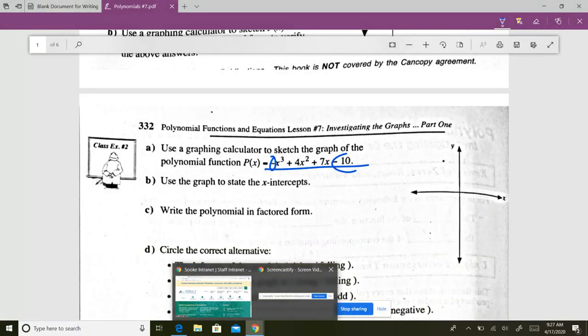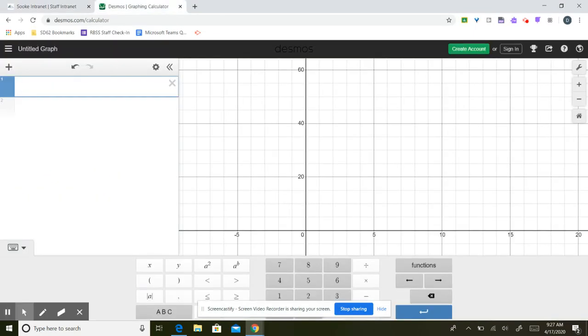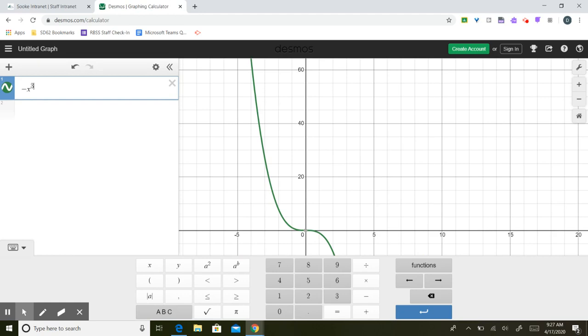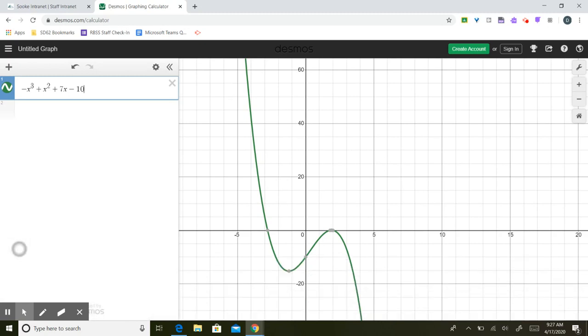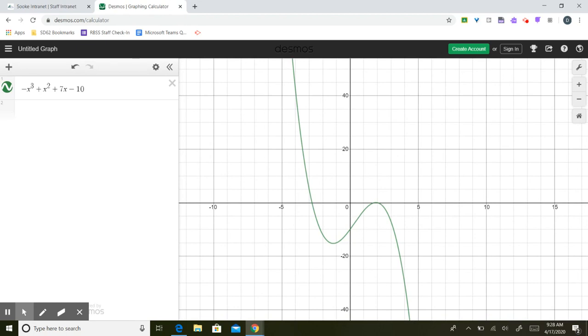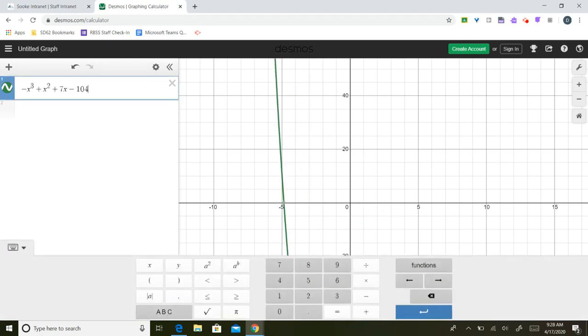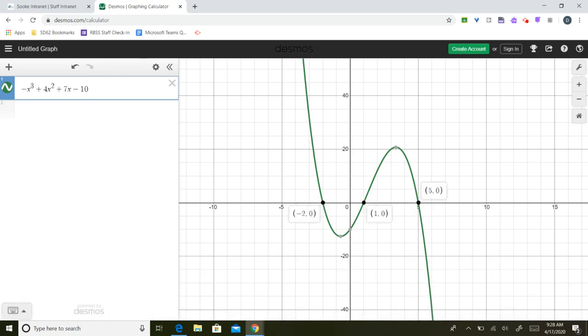So if I take this graph, and I go to Desmos, and I enter this graph in Desmos. So, x to the power of 3, plus 4x squared, plus 7x, minus 10. So there's my graph. You can see, let me screw that up, there's supposed to be a 4 there. So there we go, oh my gosh, sorry everybody. There we go.